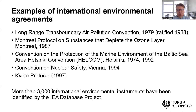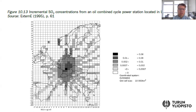Let me comment a little more on the first and last of these examples. First, regarding transboundary air pollution addressed in the early 1980s: this picture illustrates the concentrations of sulfur dioxide from a single power plant located in Germany. Sulfur dioxide is closely related to so-called acid rain. As you can see on the map on the slide, the sulfur dioxide concentrations from just a single power plant in Germany affect basically the entire Europe to some extent.